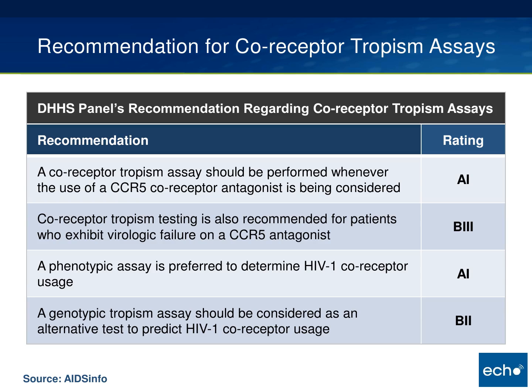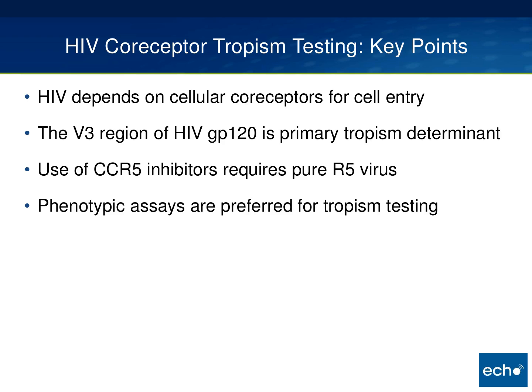Regarding how these tests are used per DHHS guidelines: First, if you are thinking about using Maraviroc, you should perform a tropism assay — never use Maraviroc without confirming pure R5 virus. Second, a tropism assay is also recommended if a patient is failing Maraviroc, as they may have emerged with predominant X4 virus. Third, phenotype is preferred over genotype, as it has more fidelity, sensitivity, and clinical experience behind it. Fourth, the genotype test is now available and can be considered as an alternative.